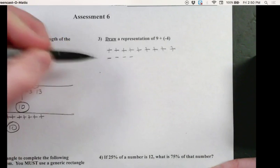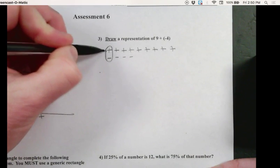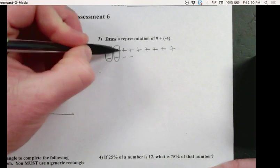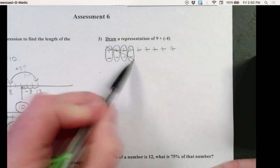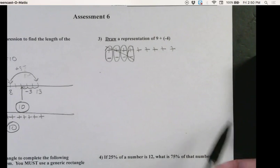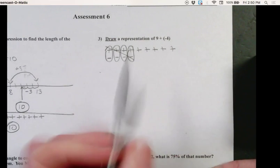A positive and a negative cancel each other. They're called a zero pair. So there's one, there's another, there's another, and there's another. Those cancel each other, zero pairs. What am I left with? Five positives.